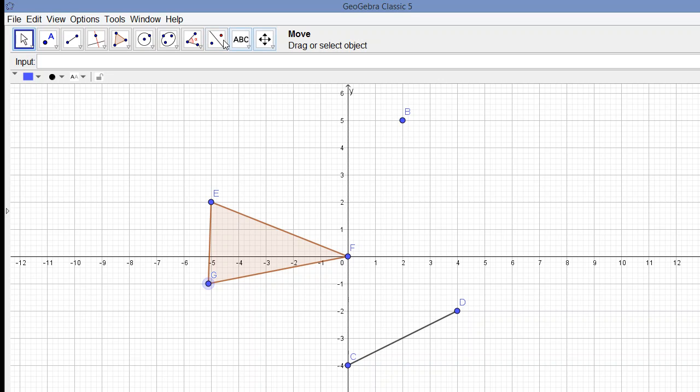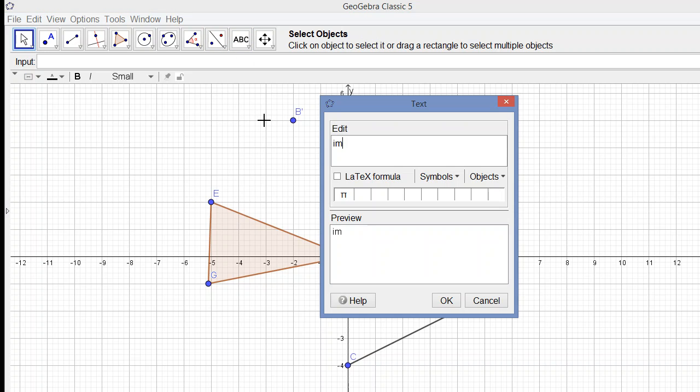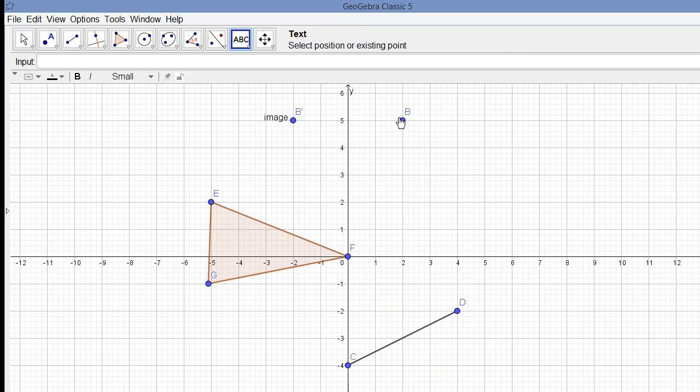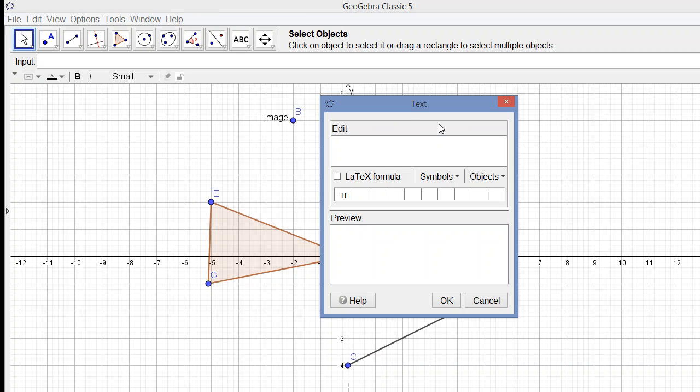I'm using the tools of GeoGebra to do this, reflecting point B in the y-axis. As you can see, B prime is the image, and B is the object.